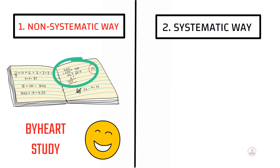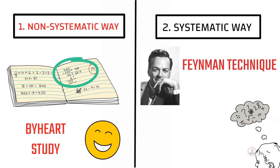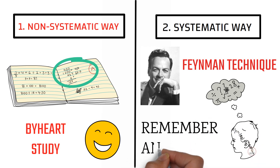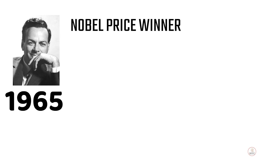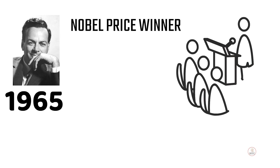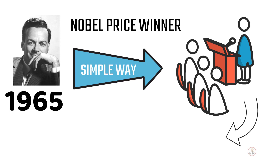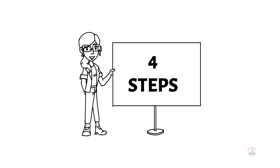The second and best option is the systematic way of learning. This is the Feynman Technique. Richard Feynman was a Nobel Prize winner in the science field. His nickname was 'The Great Explainer.' This is an amazing technique. Let's look at Richard Feynman's 4 steps in this video.